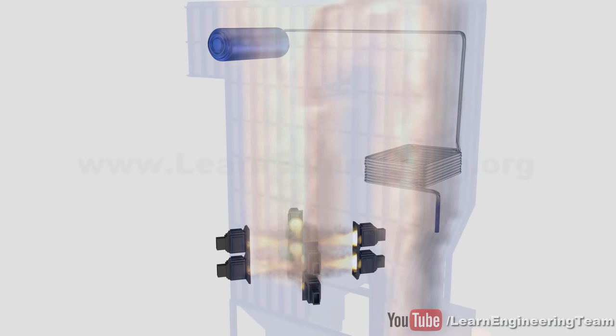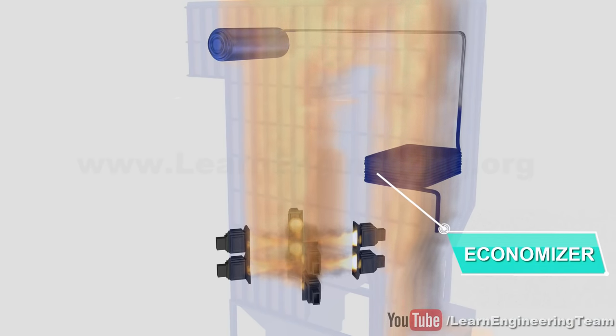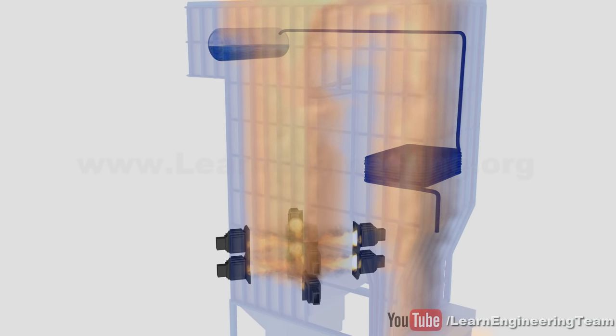The first heat absorption unit of the boiler is an economizer. Highly pressurized water supplied by the feed water pump enters here. The economizer absorbs energy from the flue gas, which raises the temperature of the liquid.